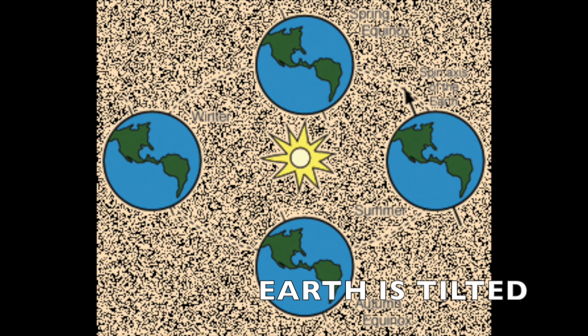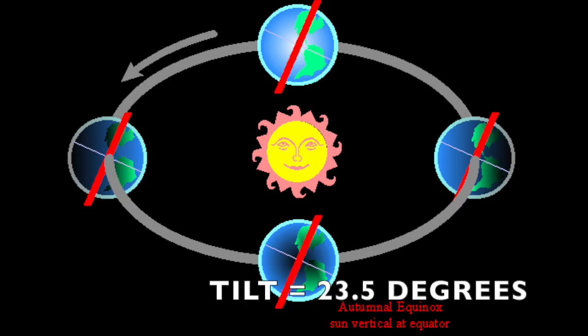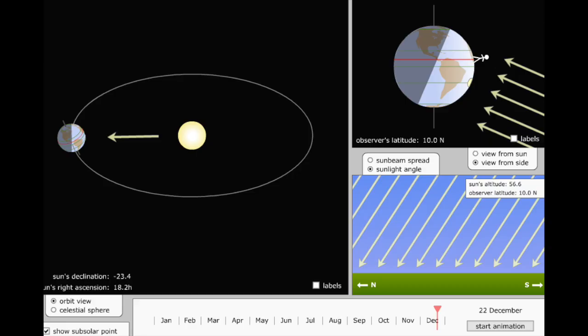When the Earth rotates, it does so tilted on its side at a 23-degree angle. In this picture, the Earth is tilted rotating around the Sun in this specific position during the month of December. Because of the low radiation the Earth is receiving from the Sun in the Northern Hemisphere, the temperatures are going to be most likely colder, producing wintertime in the Northern Hemisphere.